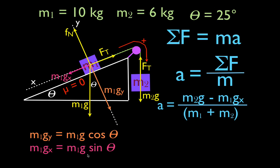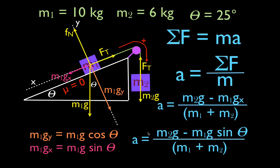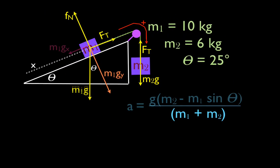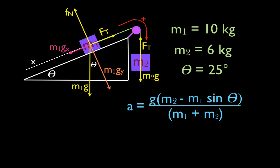This is the equation for the acceleration of the frictionless system. We know M1gx equals M1g sin theta, so substituting in: acceleration equals (M2g minus M1g sin theta) divided by (M1 plus M2). Factoring out g gives: a equals g times (M2 minus M1 sin theta) divided by (M1 plus M2). Whichever force is bigger determines the sign — if M2g is bigger we get positive acceleration; if M1gx is bigger we get negative acceleration.